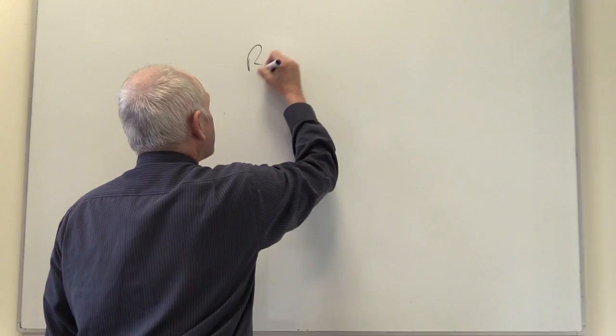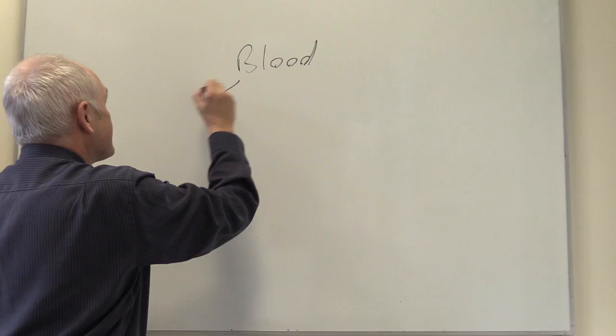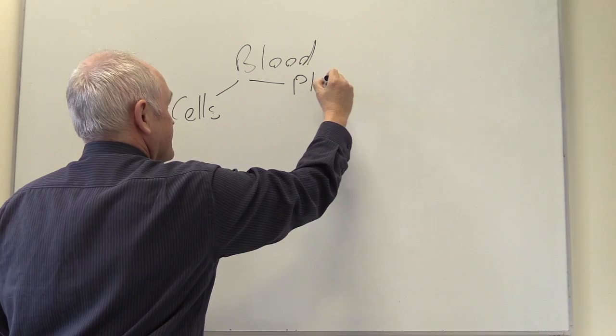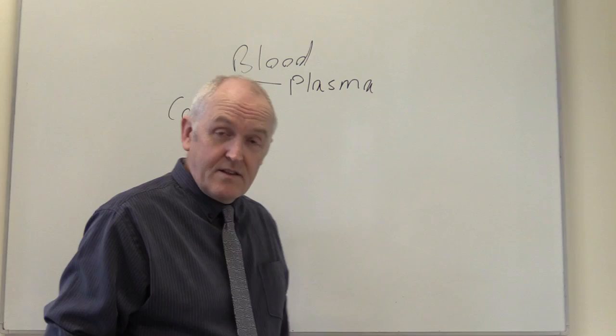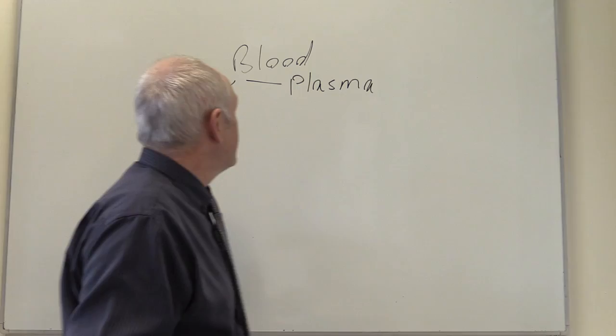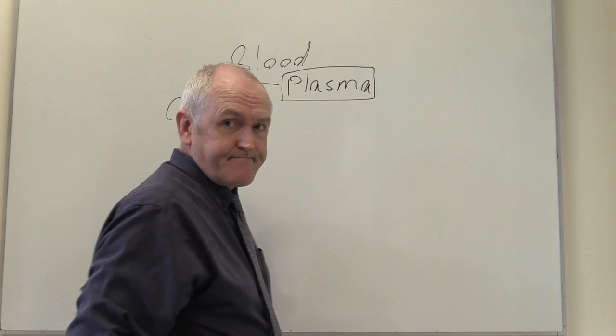We're going to look at blood, and in this video particularly we want to consider the plasma. In blood there are cells and there is plasma. The cells are going to be the red cells and the white cells — the erythrocytes and the leukocytes — but today we want to think about the plasma that they're floating in.